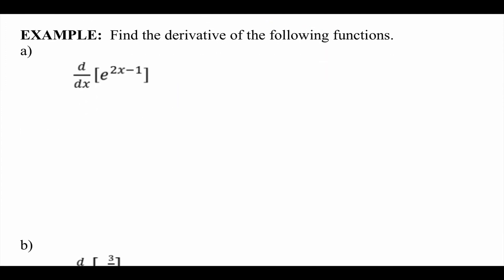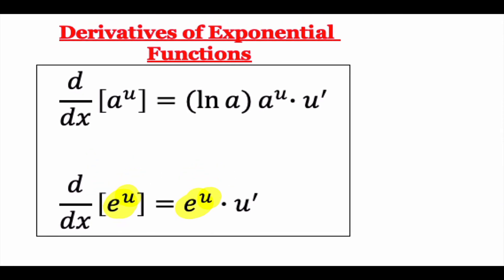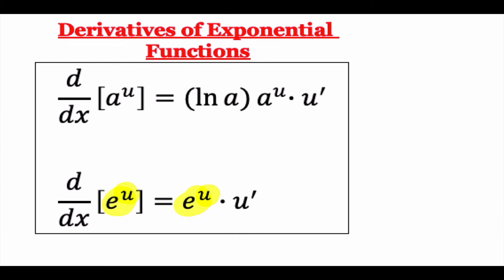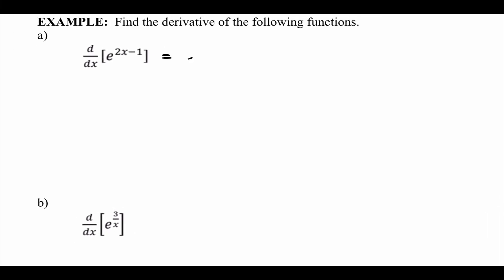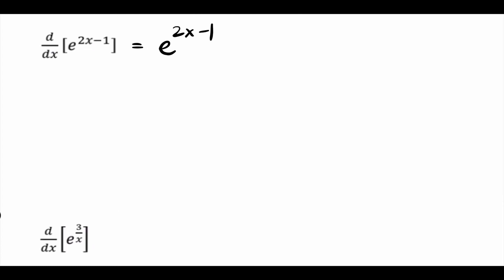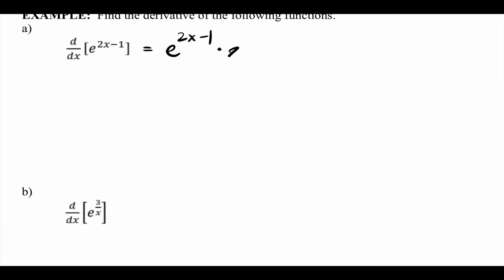Now moving to exponentials, specifically E. Two options: something to a power of x, or E to a power of x. If it's E, first it repeats itself — just rewrite it — then multiply times the derivative of whatever the power is. For example, E to the (x² - 1): the derivative of the power is 2x, so move the 2 to the front: 2e to the (x² - 1).